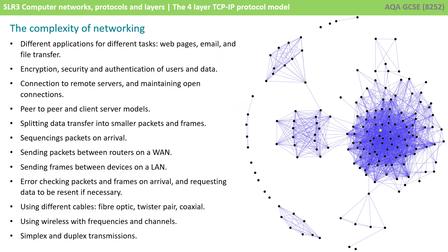Networking is a very complex operation. There are lots of different things to consider, for example, the different applications and tasks that we might perform, such as web pages, emails, and file transfer. We have to think about encryption and security of data, and authenticating user access to the data over a wide or local area network.